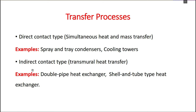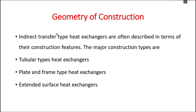In indirect contact heat exchangers, the two fluids are separated by a specific wall or boundary with no direct contact. Another classification of heat exchangers is based on the geometry of construction. The major construction types for indirect transfer heat exchangers are tubular heat exchangers, plate and frame type heat exchangers, and extended surface heat exchangers.